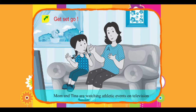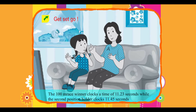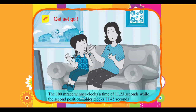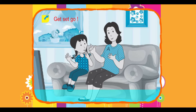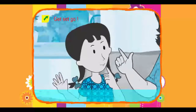Use the basic operations of addition and subtraction for decimal numbers. Get set go! Mom and Tina are watching athletic events on television. The 100-meter race winner clocked a time of 11.23 seconds, while the second position holder clocked 11.45 seconds.